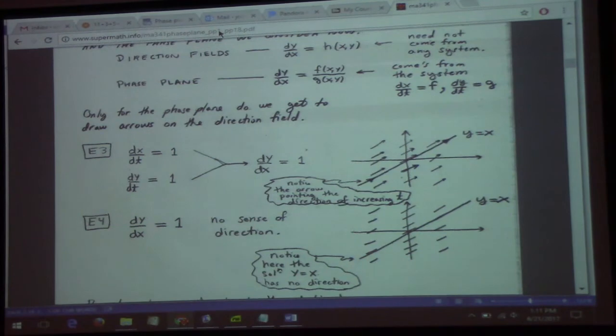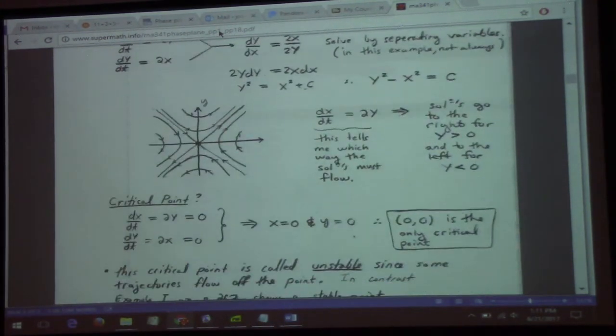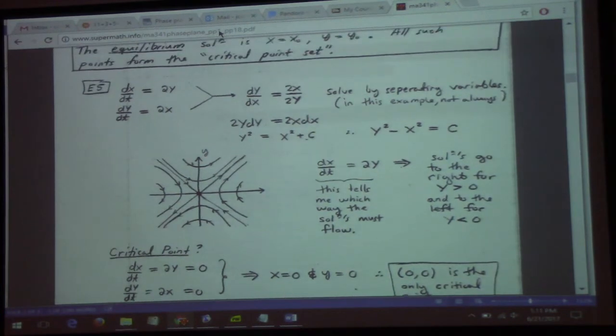Here's another one. dx/dt equals 2y, dy/dt equals 2x. Again, to get both of these to 0, what do we have? We have the origin as our critical point. To get dy/dt and dx/dt both 0, we need x and y both 0. The origin's a critical point.